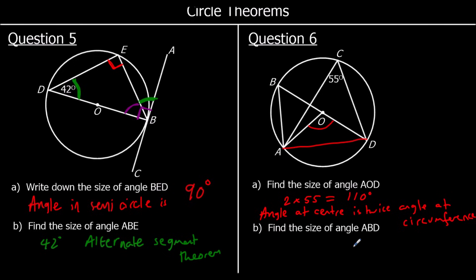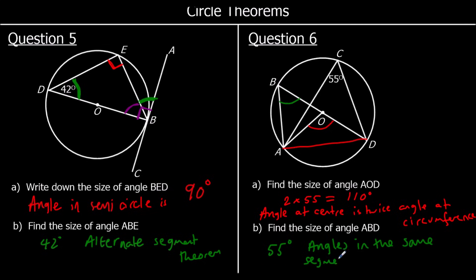Find the size of angle ABD. Angles in the same segment are equal — or angles from the same chord are equal, or from the same arc are equal. So ABD = 55 degrees, because angles in the same segment are equal.